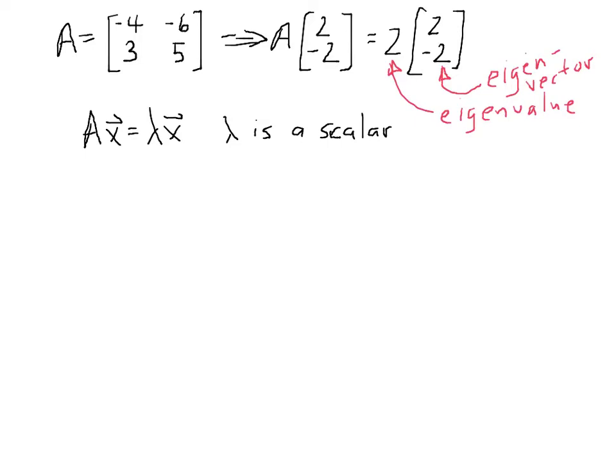So the key to figuring out both lambda and x, see the problem is we have two unknowns there, the vector and the eigenvalue. The key is to modify this equation just a little bit. So let's take a look at how we do that.